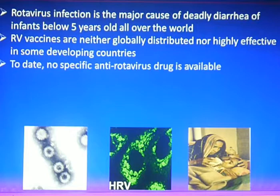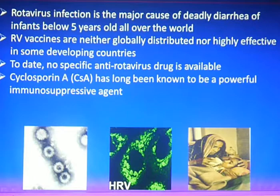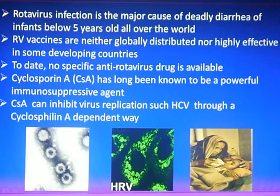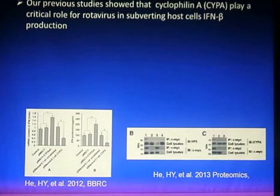To date, no specific anti-rotavirus drug is available, largely due to a lack of understanding of the molecular mechanics underlying virus-induced pathology. Cyclosporin A has been known as a powerful immunosuppressive agent, broadly used in clinical organ transplantation. It can inhibit virus replication, such as hepatitis C virus, through a cyclophilin A-dependent pathway. Our previous studies showed that cyclophilin A plays a key role for rotavirus in host cells and virus production.